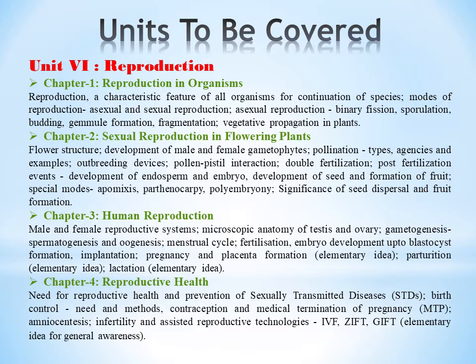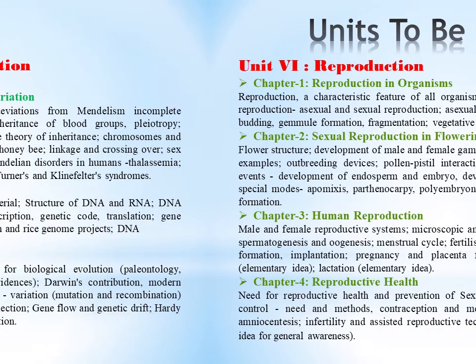In Chapter 4, under reproductive health, we're going to learn about the need for reproductive health, prevention of sexually transmitted diseases, then the needs and methods of birth control, contraception and medical termination of pregnancy, amniocentesis, infertility and assisted reproductive technologies.